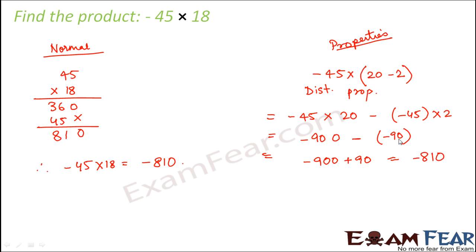So this is equal to -900 + 90 which is equal to -810. So you see in this case, you do not need to perform the traditional way of multiplication. Just by simplifying with the help of properties, you can solve it. This is a far more easy way when compared to the normal method.